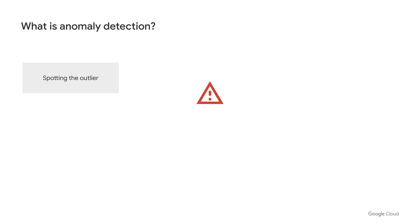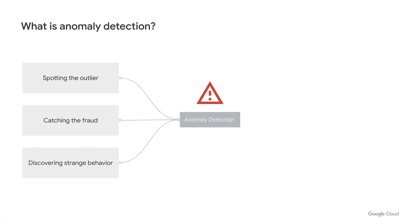What is anomaly detection? Spotting the unusual, catching fraud, and discovering strange activity. All of this sounds like Sherlock Holmes solving a mystery. That's what anomaly detection is, except we may not have a clear suspect to search for, and you may not even know what the crime is.